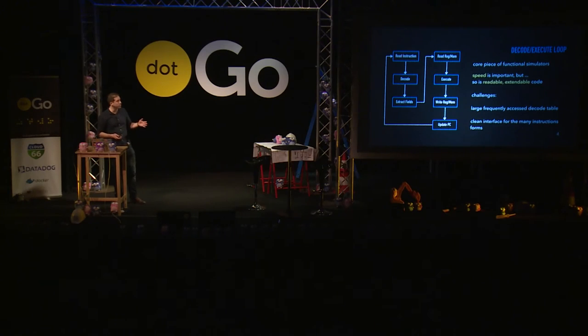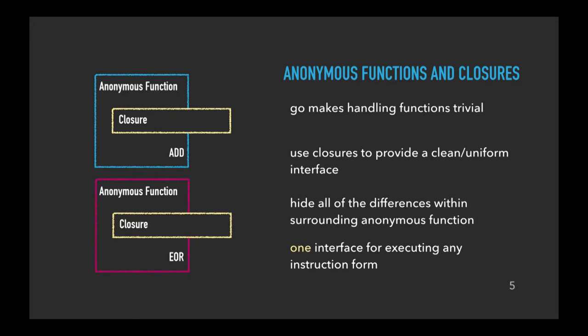There are a bunch of challenges to writing a decode-execute loop. One of them is that it's quite difficult to create a clean interface, as within a computer architecture there tends to be quite a number of different instruction forms, each taking a different number and type of parameters. Go makes handling functions incredibly trivial, and one of the ways that you can make a clean, uniform interface is to abstract some of the difference between those instruction forms into an anonymous function and just expose a closure that provides one interface for executing any of the instructions within the architecture.